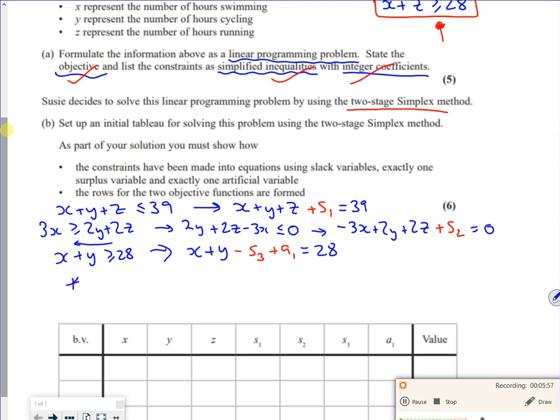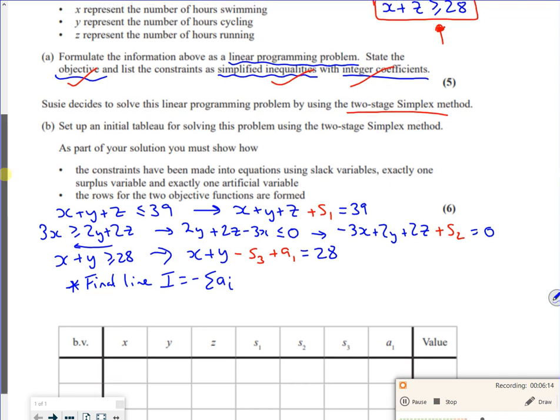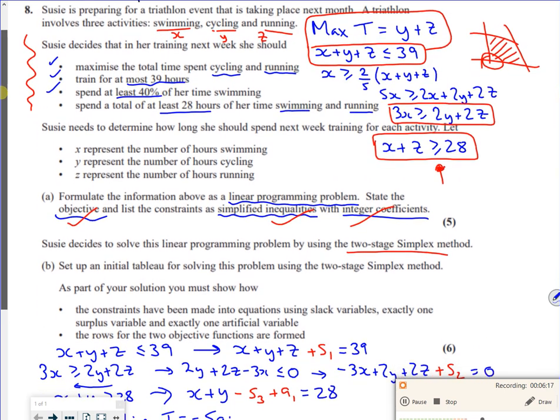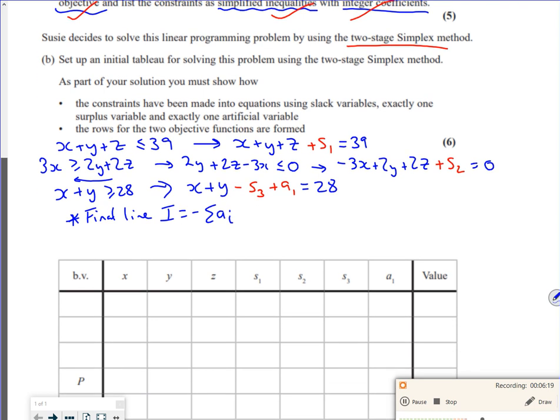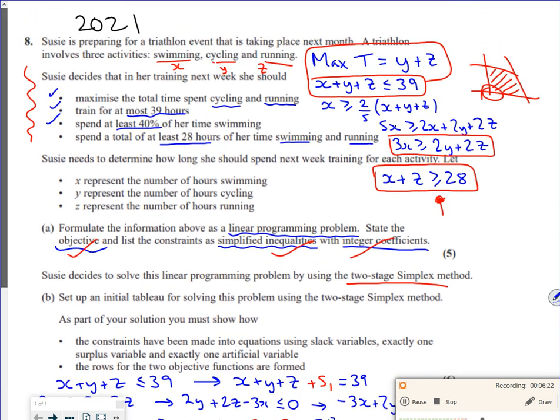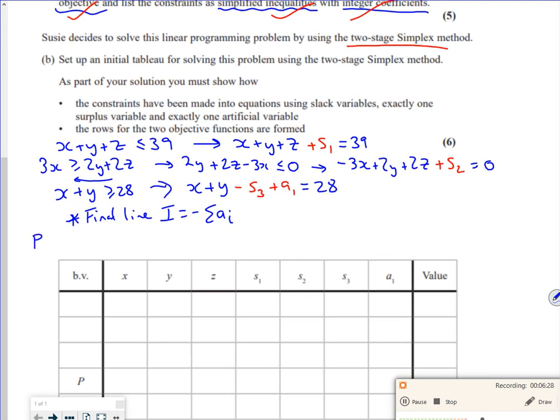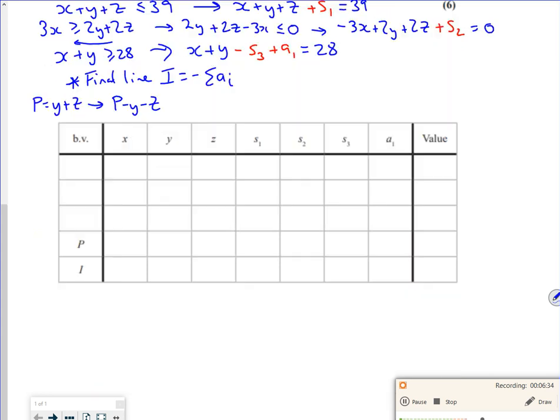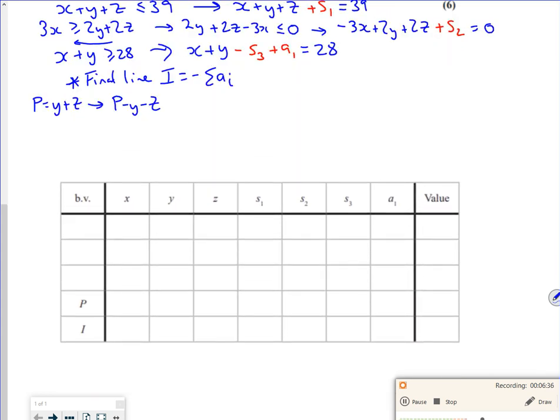Now remember for the two stage, I need a line. The final line in my table is like an I. It's minus the sum of a_i. That's what I want as a final line. My P line, which was the T line. We want T equals Y plus Z. Well, they've actually used P, so let's go back and change that. So P equals Y plus Z.